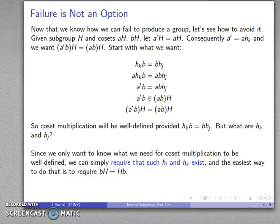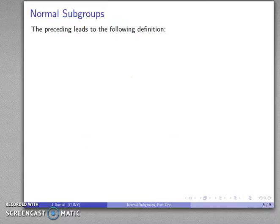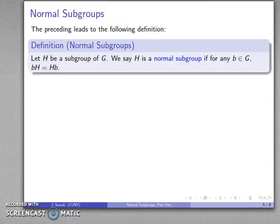And that seems to be the requirement. So we now have the following definition: let H be any subgroup of G. We say that H is a normal subgroup if for any element of G, the left and right cosets are the same.